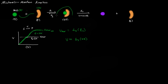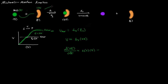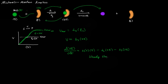Let's look at how the substrate-enzyme complex is generated and consumed. The rate of change of [SE] with respect to time equals K1·[S]·[E] — the formation rate — minus K2·[SE] — the reverse dissociation — minus K3·[SE] — the forward conversion to product. Applying the steady-state assumption, we set d[SE]/dt ≈ 0.